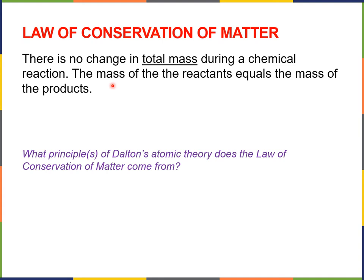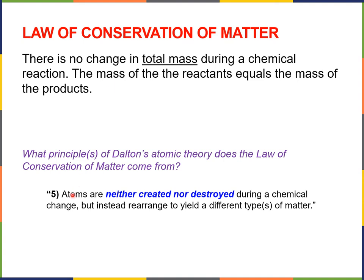What principle of Dalton's atomic theory does the law of conservation of matter come from? Atoms are neither created nor destroyed during a chemical change, but instead rearranged to yield a different type of matter. Because atoms are the building blocks of matter and give matter its mass, and because those atoms are not created or destroyed but rearranged, the mass before the reaction and after the chemical change must be the same.